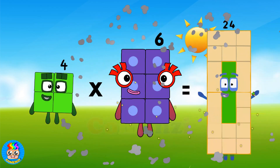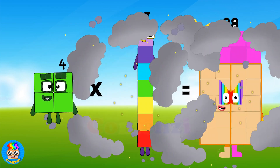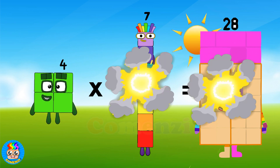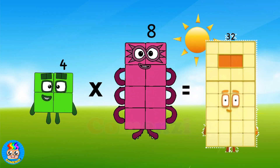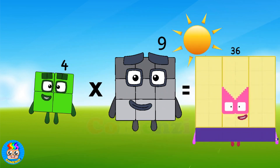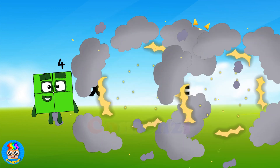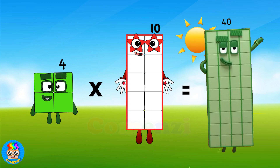Four times six is twenty-four. Four times seven is twenty-eight. Four times eight is thirty-two. Four times nine is thirty-six. Four times ten is forty.